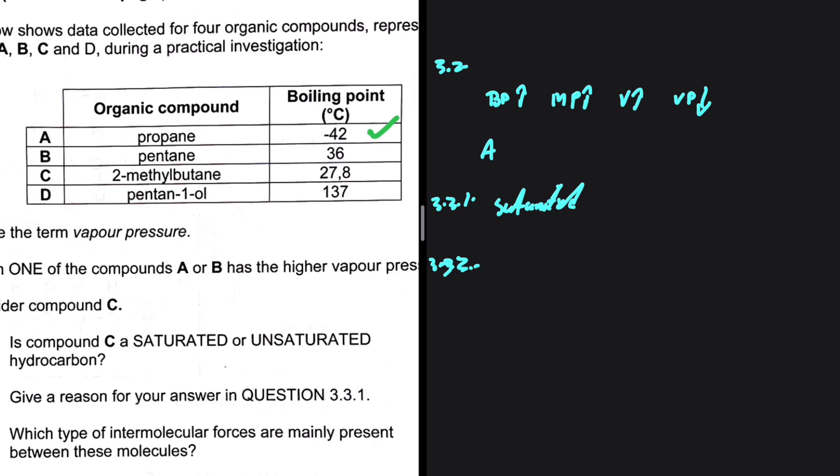2-methylbutane, and then we have an outlier, pentane 1-ol. As you can see, one intermolecular force that is present from compound A to compound D is London dispersion forces. It is present even in